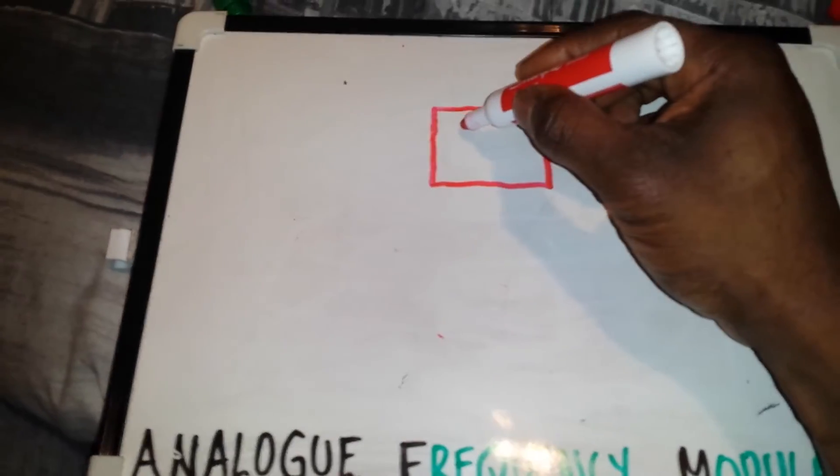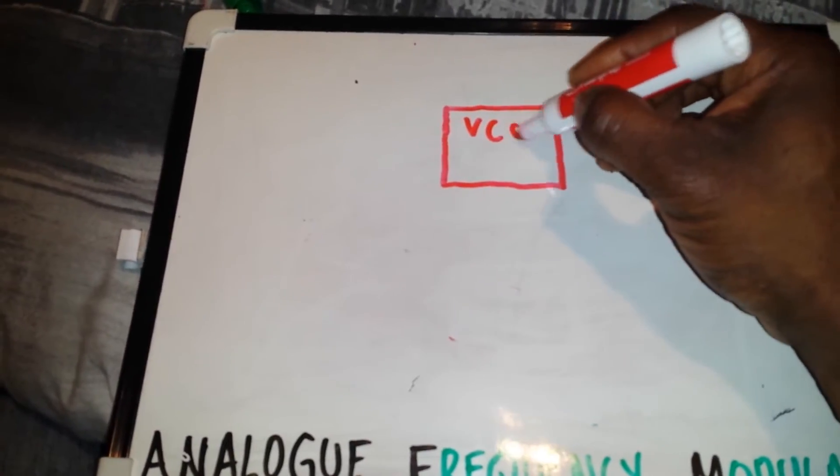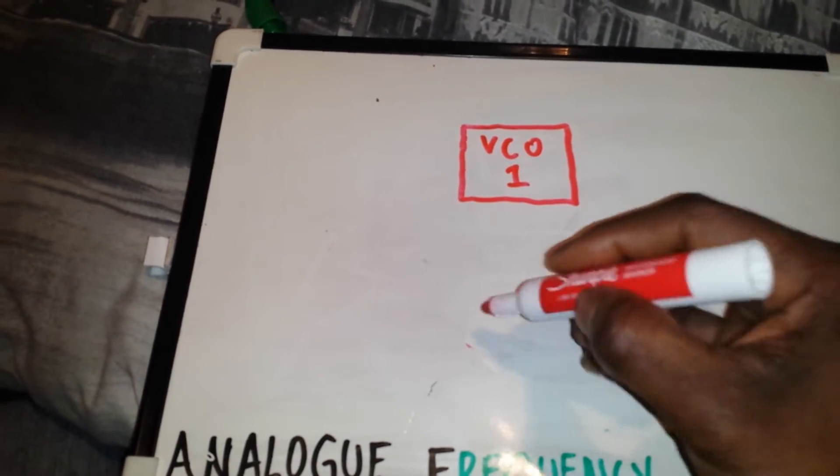Now what we have is we'll call this VCO1. I'm going to try and do this in a block diagram format.